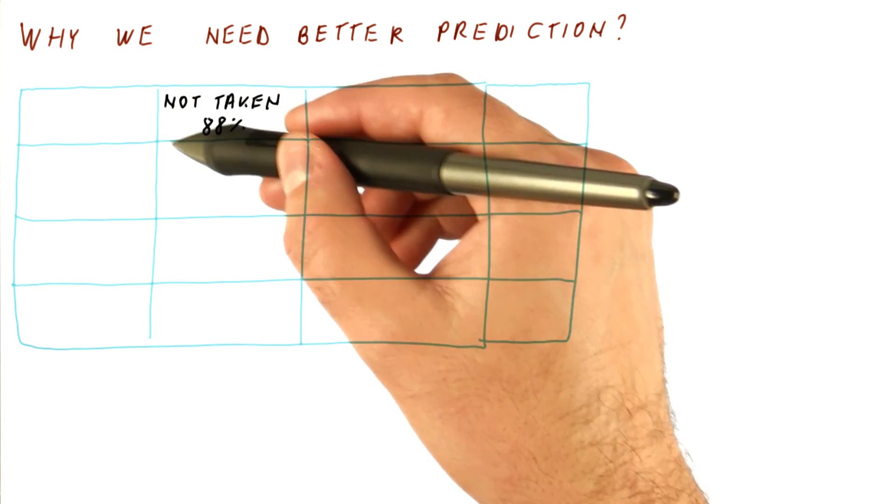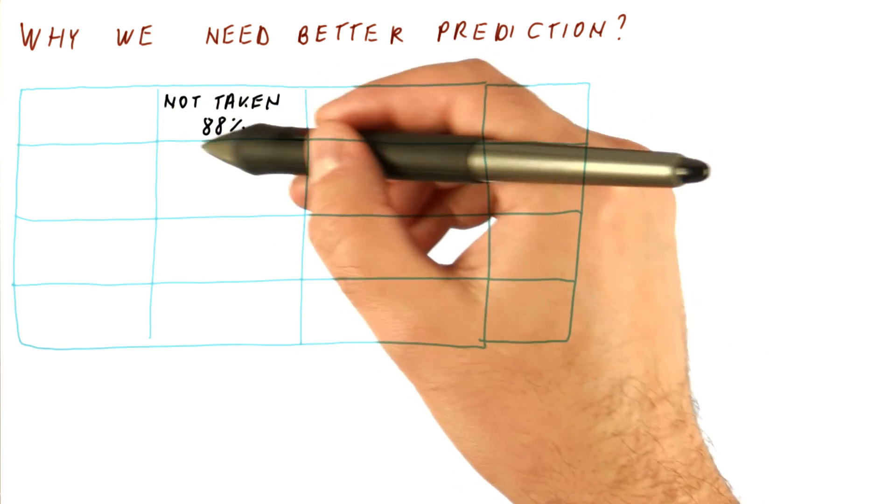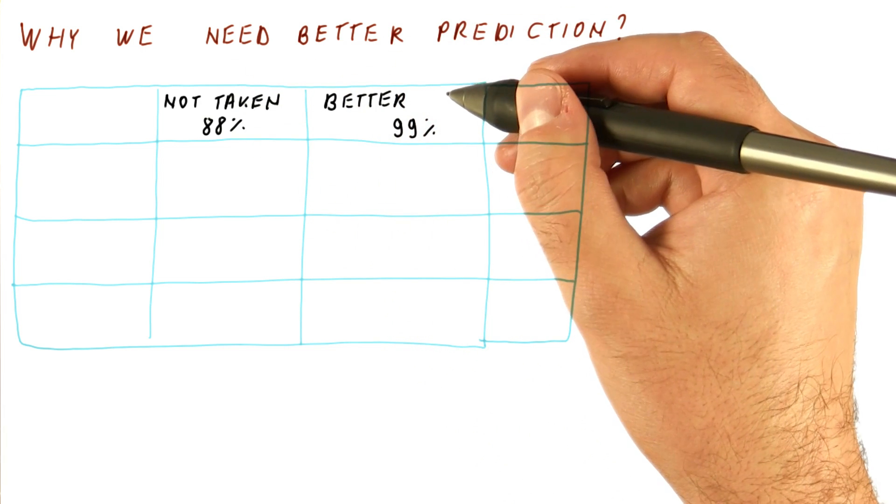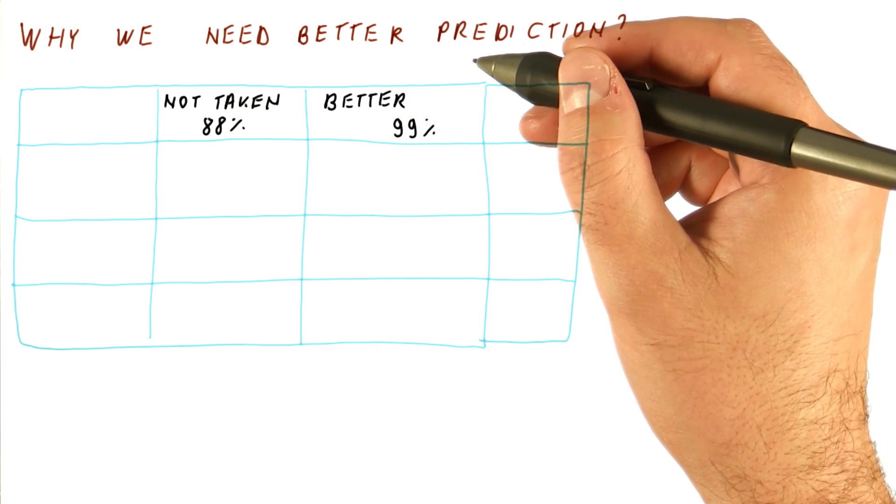First, we will compare the CPI with the not taken predictor, that is, let's say, 88% accurate, and with a better predictor that is, let's say, 99% accurate.